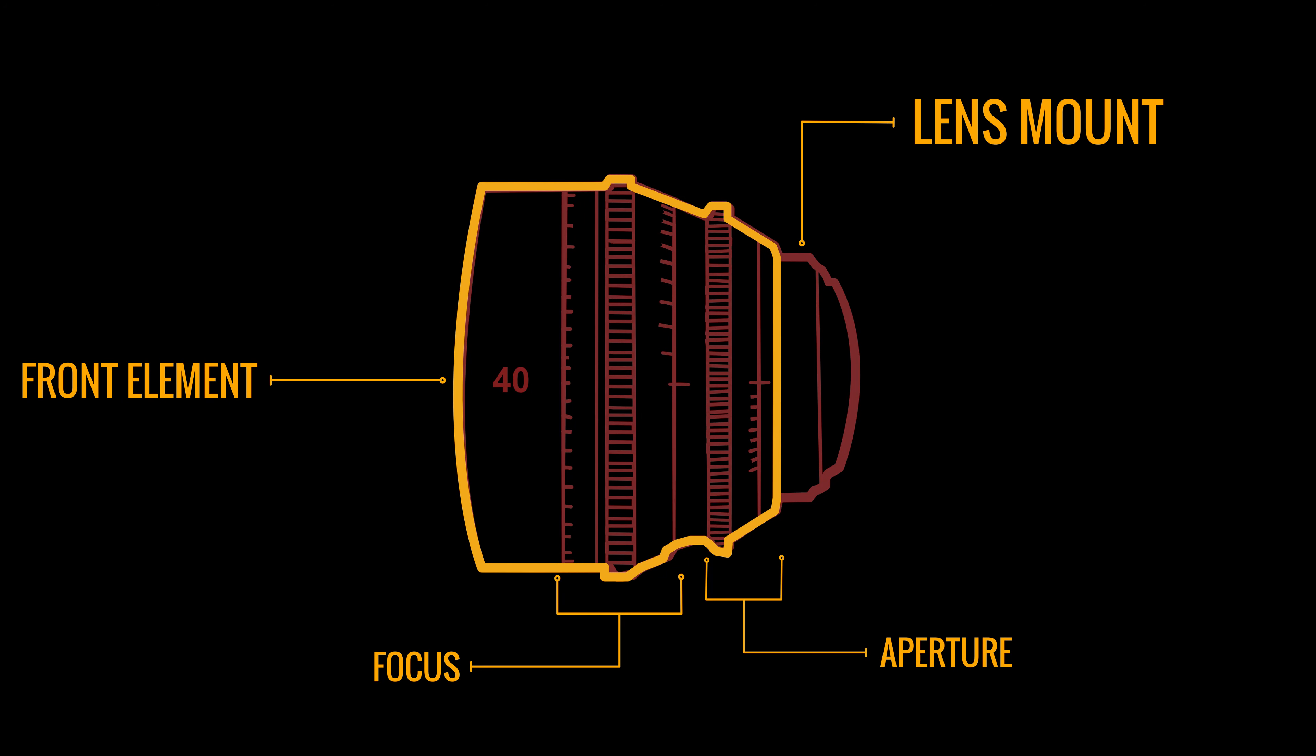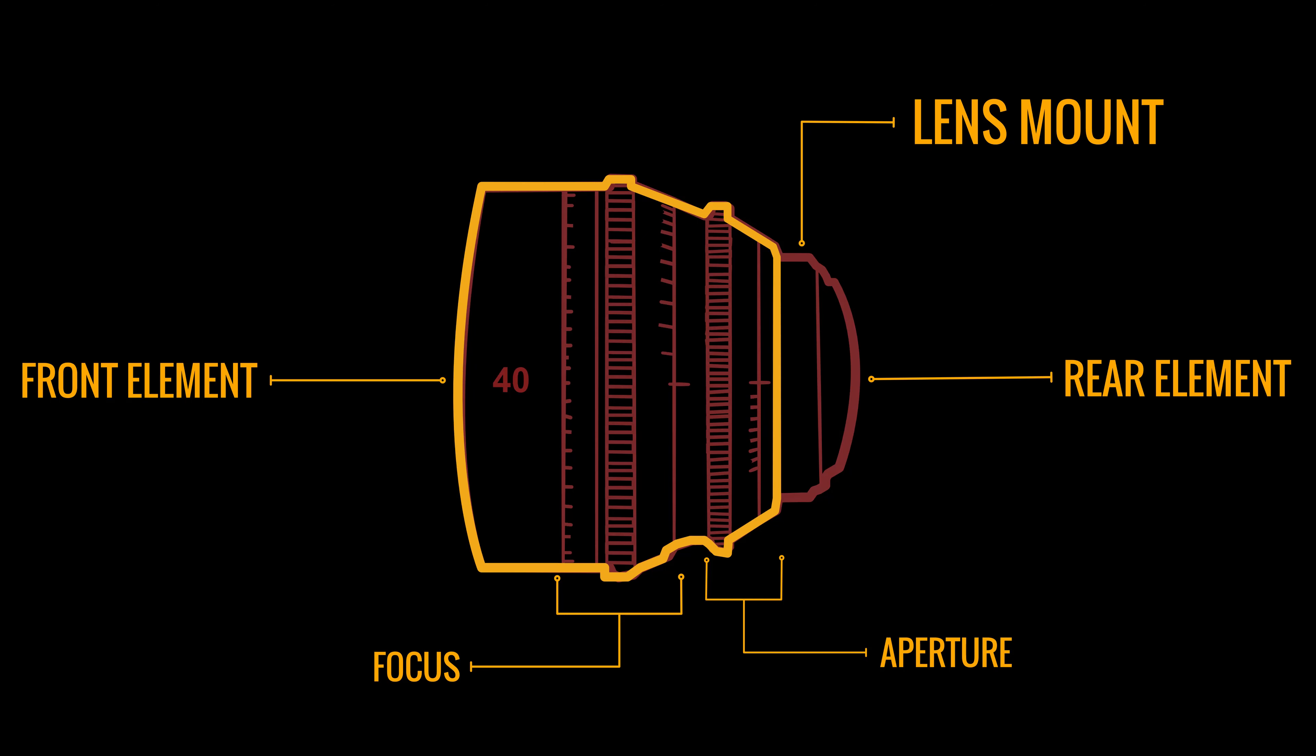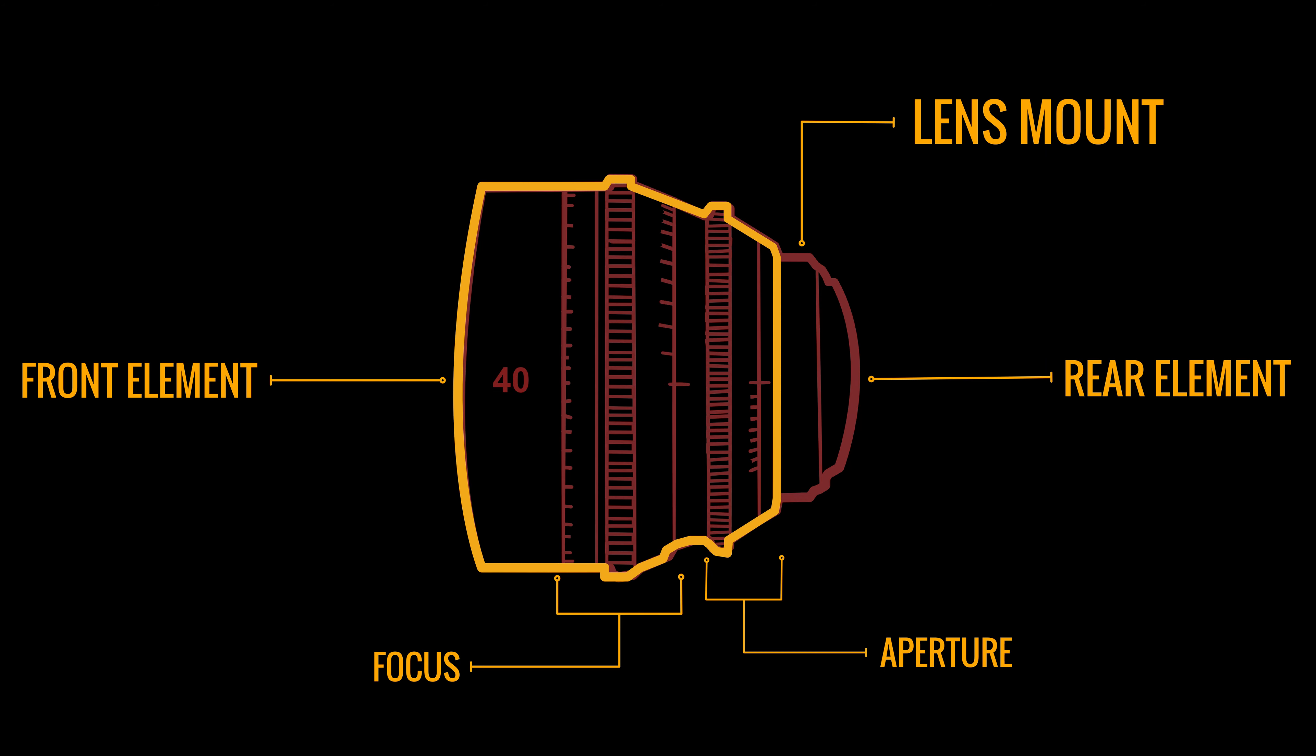You then have the lens mount. Lens mounts can come in a variety of different flavors—usually the industry standard is PL. You can also get EF, you can get E mount, you can get X mount like the Fuji. There are lots and lots of different types of lens mounts you can get. And then taking up the rear is the rear element, and that is the rear piece of glass.